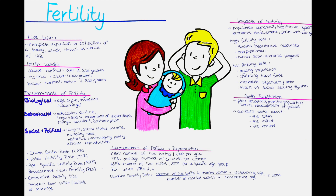Fertility and reproduction have profound impacts on population dynamics, healthcare systems, economic development, and social well-being. High fertility rates constrain healthcare resources, contribute to overpopulation, and hinder socioeconomic progress. Conversely, low fertility rates and population aging pose challenges such as a shrinking labor force, increased dependency ratios, and potential strains on social security systems.